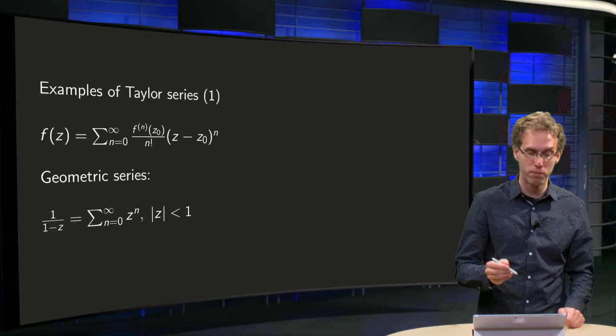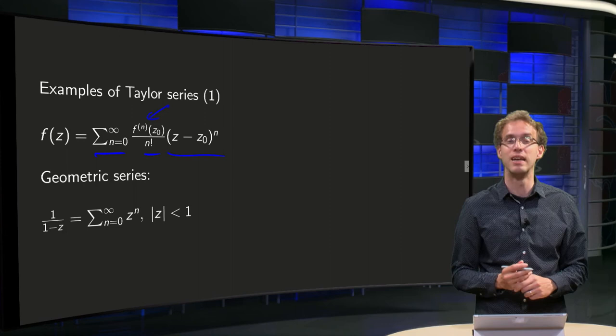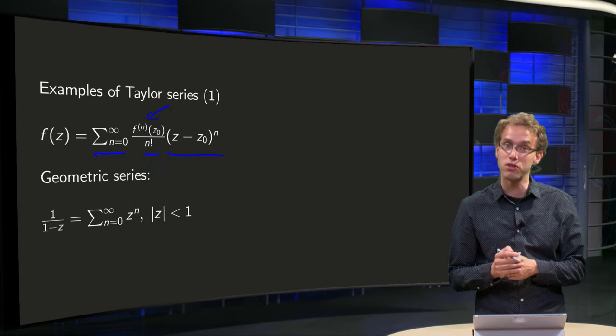You know the general formula of a Taylor series around z0: sum n from 0 to infinity, f^(n)(z0) divided by n factorial times (z - z0)^n. Of course, it is inconvenient because if you want to use it you have to differentiate infinitely many terms.